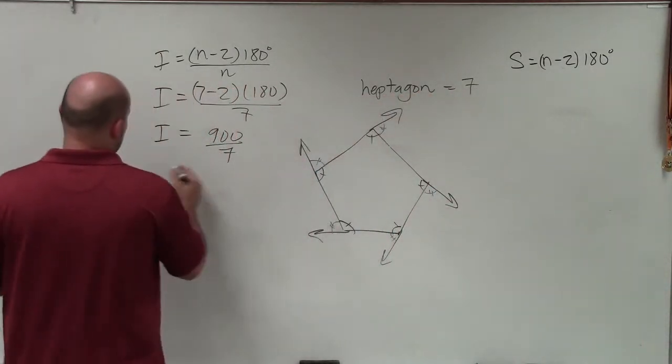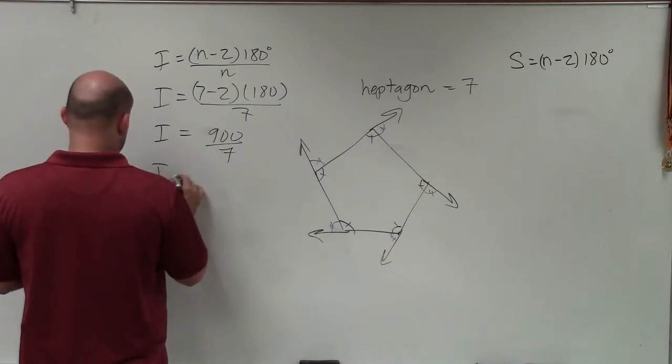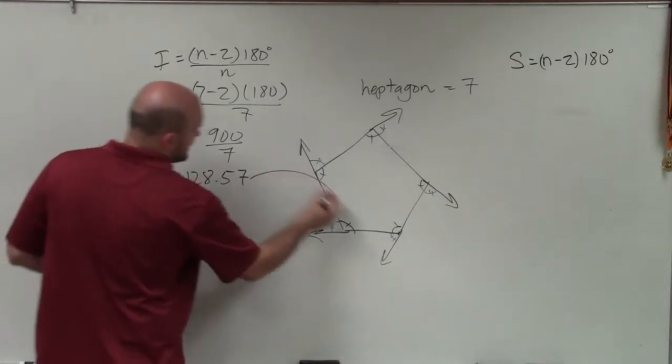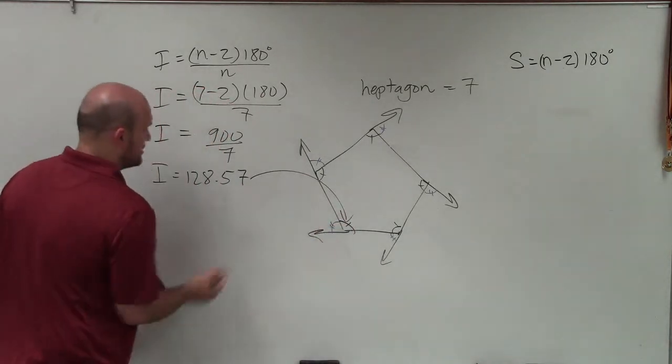And that's going to be 128.57. So the measure of the interior angle is equal to 128.57 degrees. So we can say, hey, that's the measure of that angle. But we want to figure out the exterior angle.